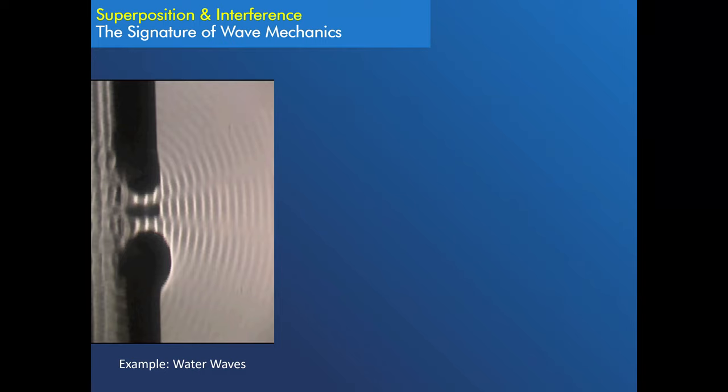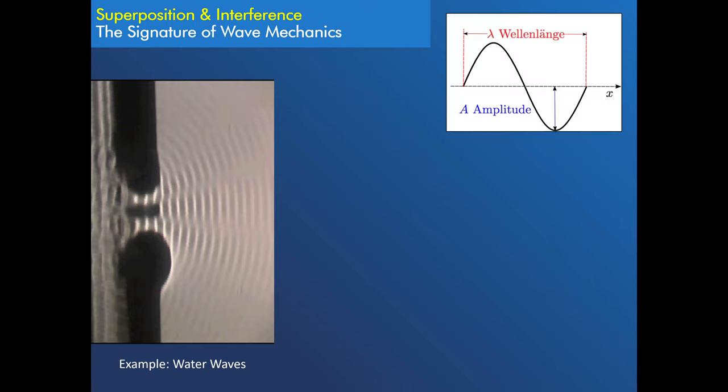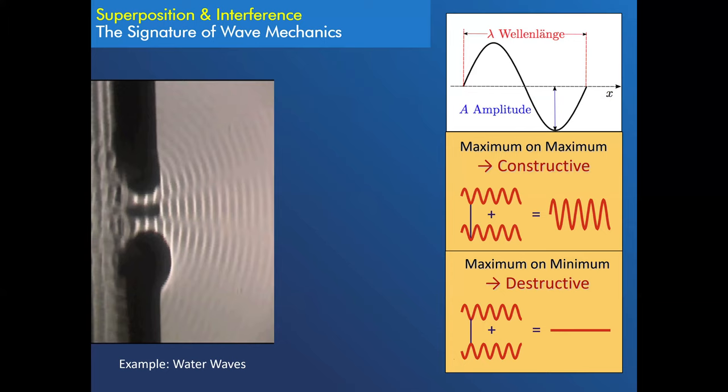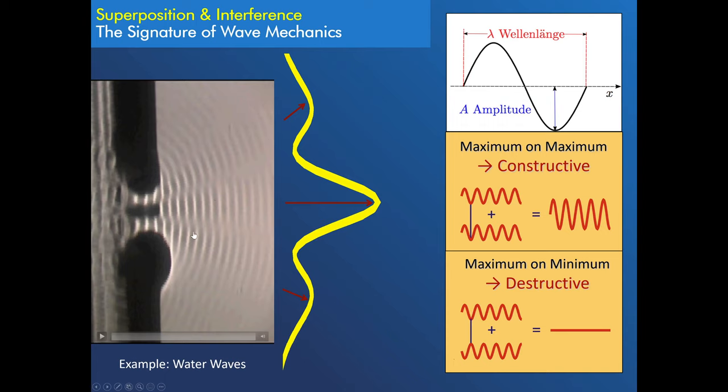Then there will be secondary wavelets coming out on the right-hand side. And, well, if you make these slits very tiny, then they will look spherical or cylindrical in this case, and they will start to overlap. And wherever they overlap, they can either do that constructively when the troughs and the peaks overlap, or they can do it destructively when they're out of phase 180 degrees.